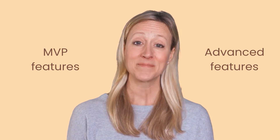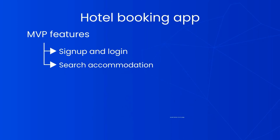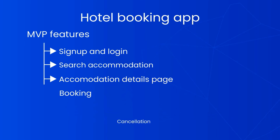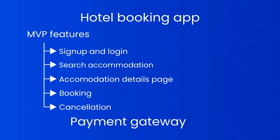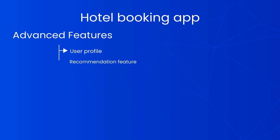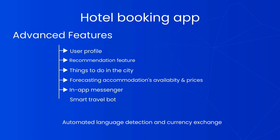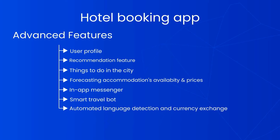All the features of an application are divided into two parts: MVP features and advanced features. In the case of hotel booking apps, MVP features include sign-up and login, search accommodation, accommodation details page, booking, cancellation, and payment gateway. Advanced features include user profile, recommendation feature, things to do in the city, forecasting accommodations availability and prices, in-app messenger, smart travel bot, automated language detection, currency exchange, and push notifications.